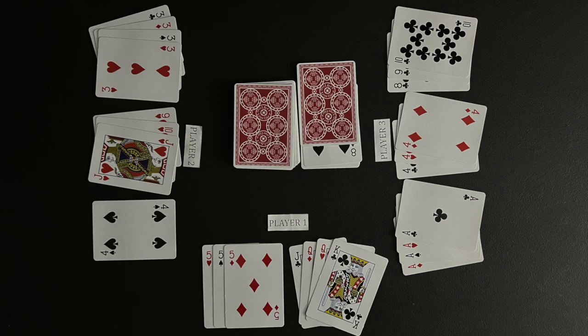The player to go rum gets 1 point for each unmatched card in the other player's hands. Player 1 has 4 unmatched cards, and player 2 has 1 unmatched card. Player 3 will score 5 points. The first player to an agreed upon amount of points wins the game.